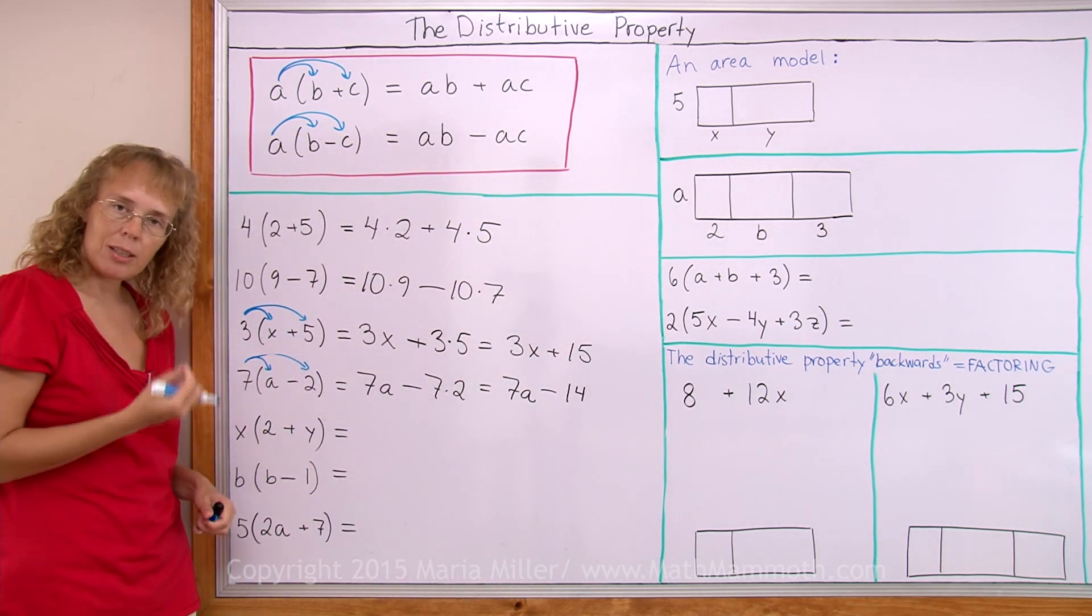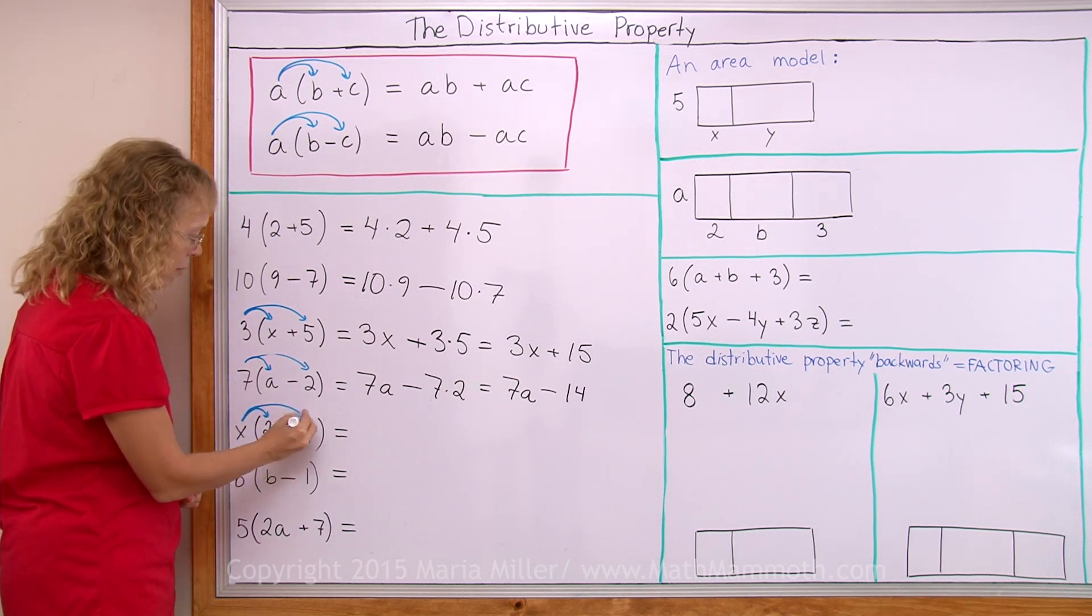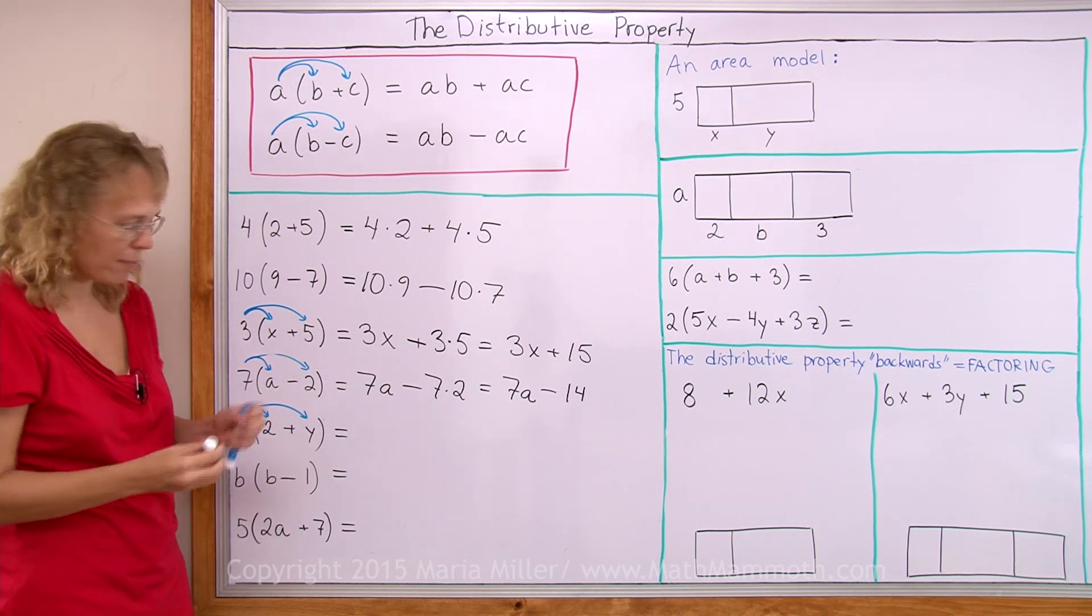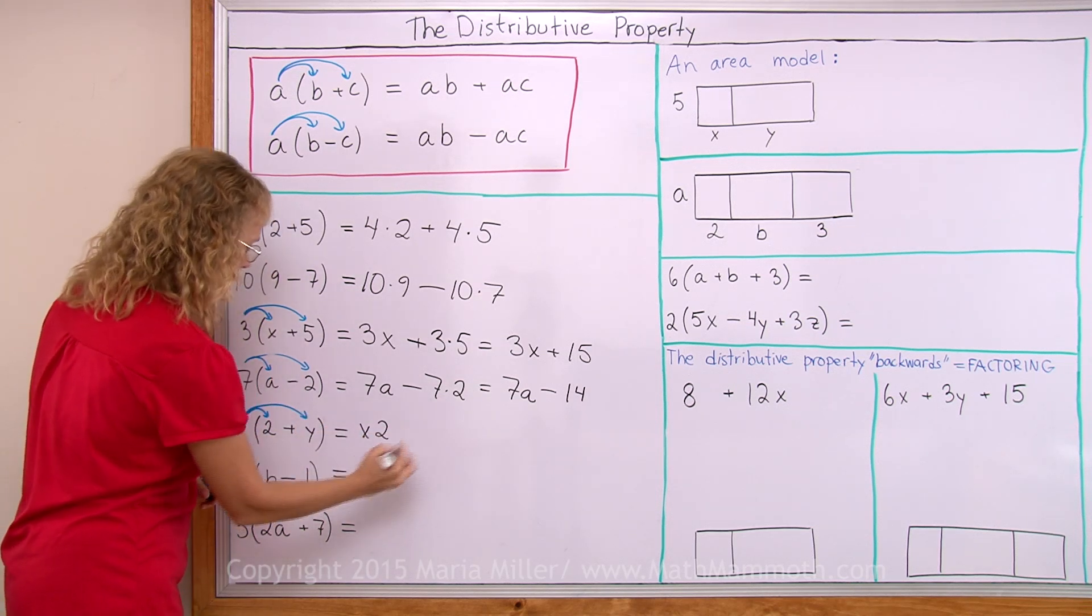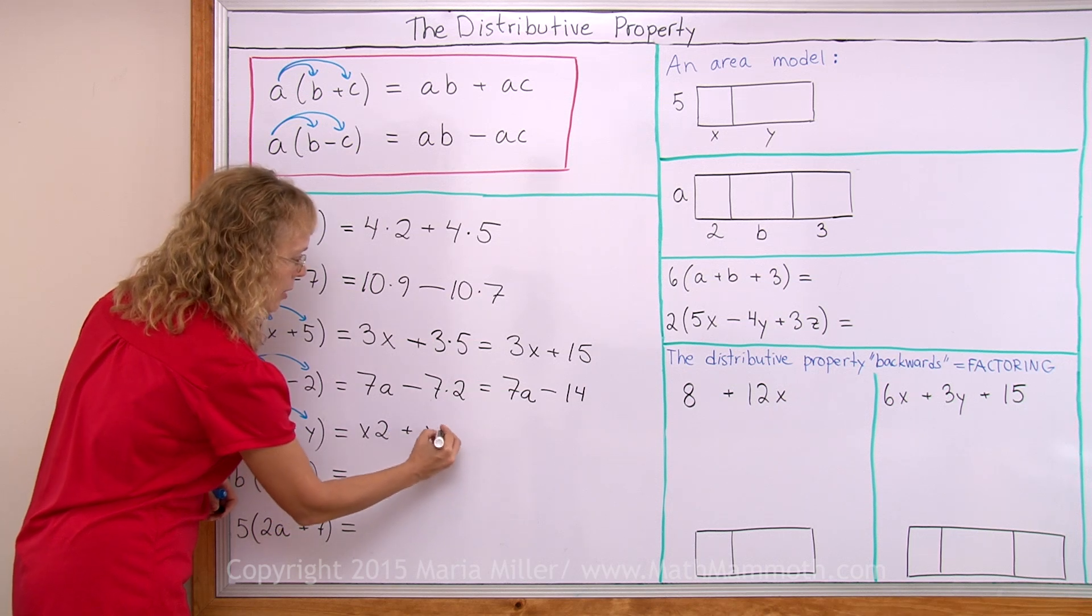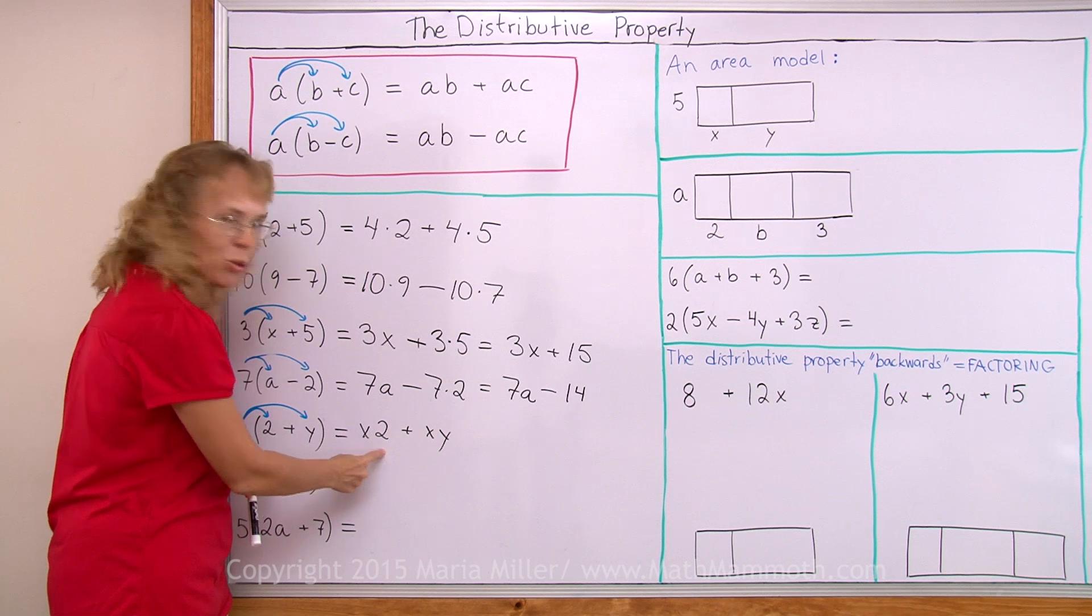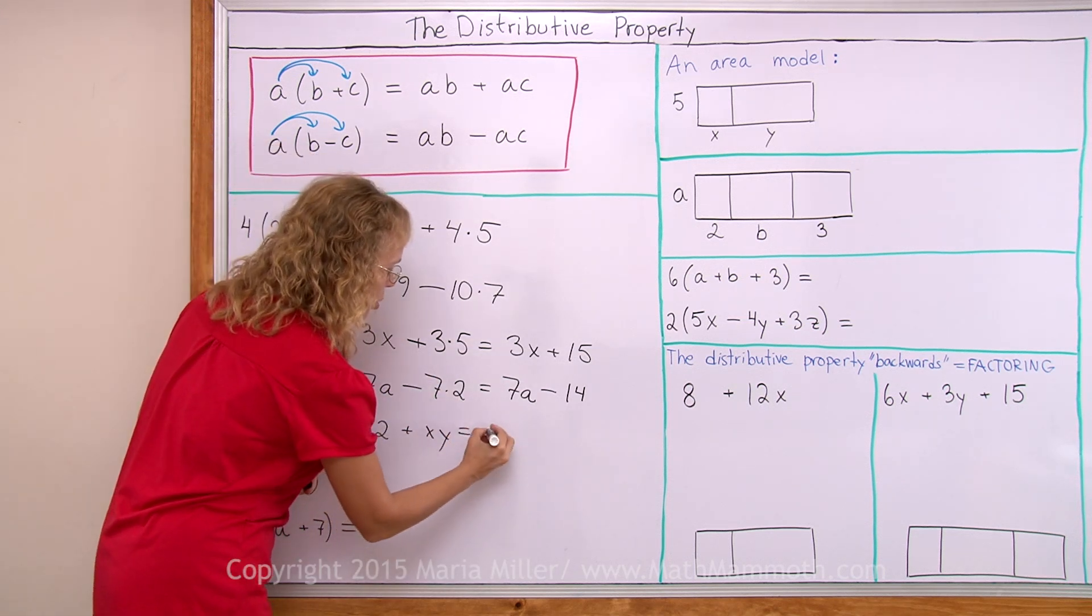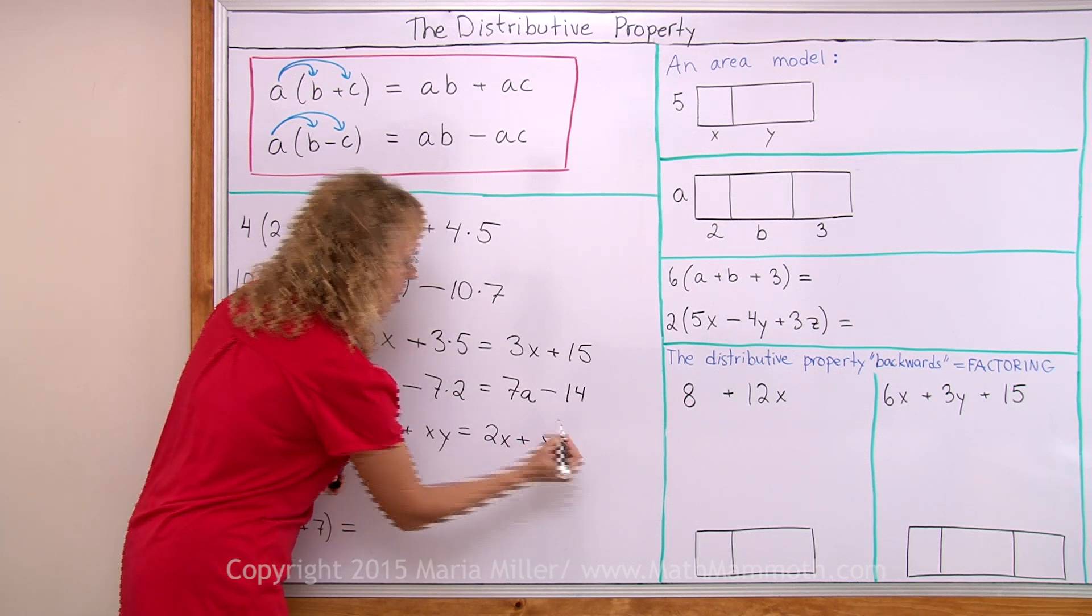Over here there's a variable outside. x times 2 - it won't matter, it works the same way. x times 2 and then x times y. So I will write x times 2 plus x times y. However it is customary in math that we write 2 times x instead of x times 2, so I will write the 2 in front of x. 2x plus xy.